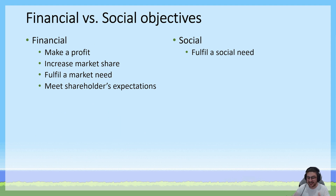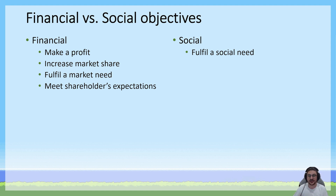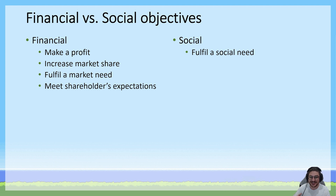It's important to note that many objectives are financial in nature: making a profit, increasing market share, fulfilling a market need, and meeting shareholder expectations are all typically financial objectives — related to how money is made, how much is made, and how it's spent. A social objective is distinct from these because we measure success in a social program by its social impacts rather than financial metrics. While social enterprises prioritize social objectives, every business can have both financial and social objectives.